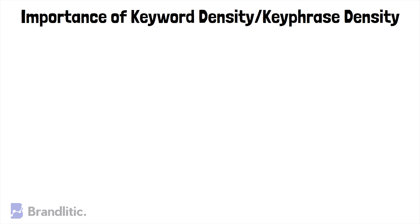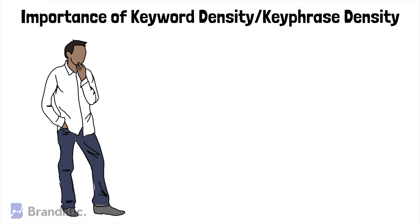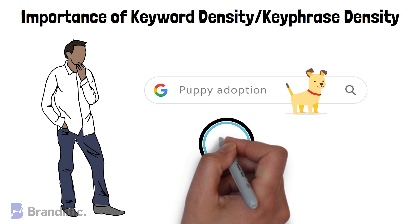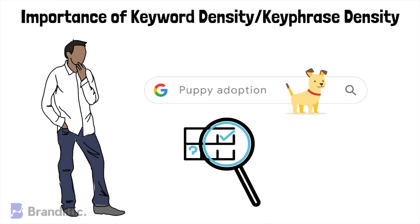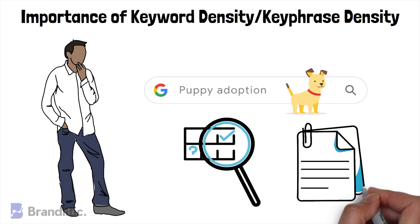Why is key phrase density important for SEO? Many digital marketers think that keyword density is not an important metric, but key phrase density is important for SEO because Google tries to match a user's search query to the best fitting web pages on the internet. To effectively do this, Google first needs to understand what your webpage is about, and that's why you should use your key phrase — the phrase you'd like to rank for — in your copy.